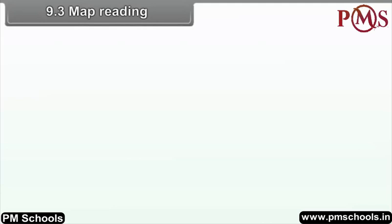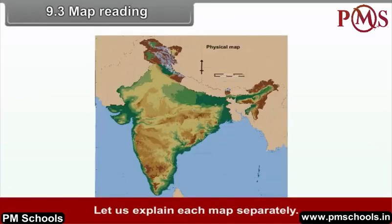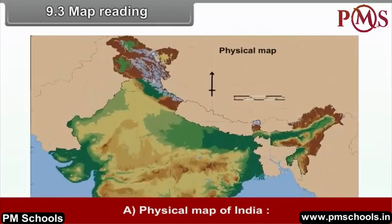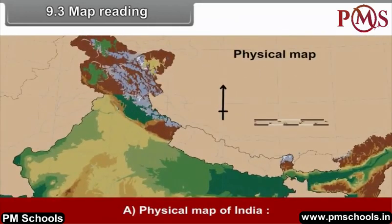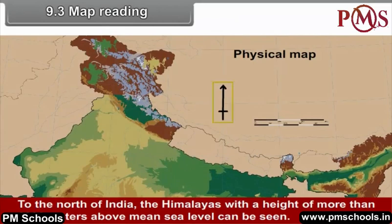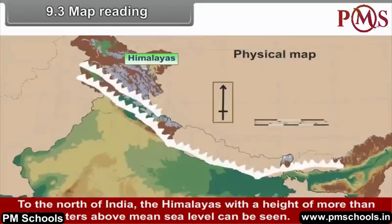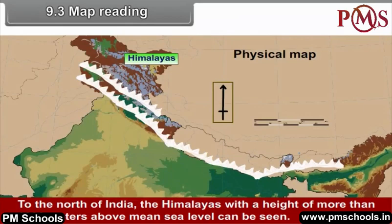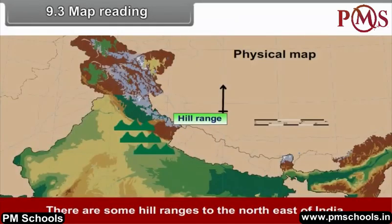9.3 Map Reading. Let us explain each map separately. A. Physical Map of India: To the north of India, the Himalayas with a height of more than 6000 meters above mean sea level can be seen. There are some hill ranges to the north east of India.